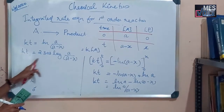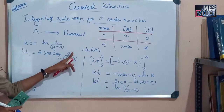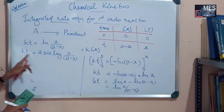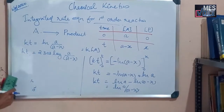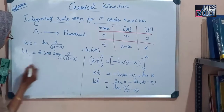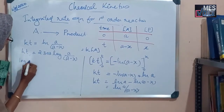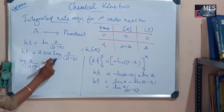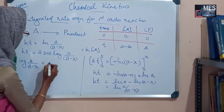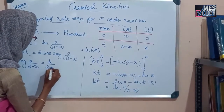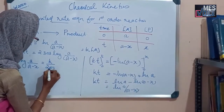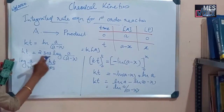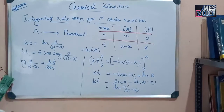Here, K is the rate constant, T is the time, A is the initial concentration of the reactant, and X is the concentration of the product at a particular time T. On rearranging this equation, log(A / (A minus X)) is equal to KT / 2.303. This equation, log(A / (A minus X)) = KT / 2.303, is in the form of the equation of a straight line passing through the origin.